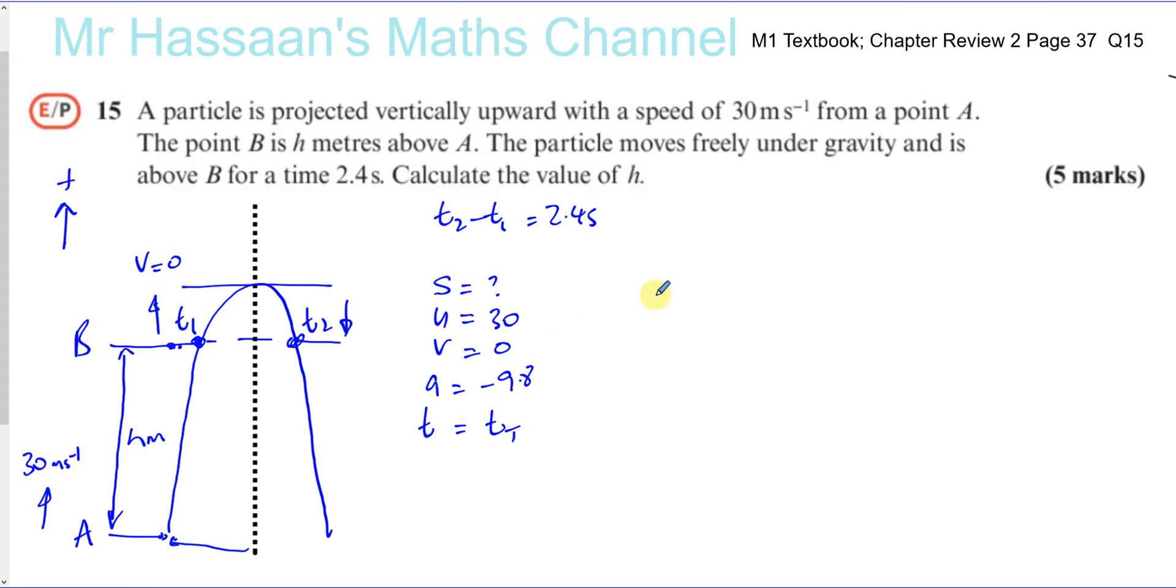So we can use V equals U plus AT here. So we're going to say V is zero, U is 30, A is minus 9.8, and T is time for the top of the flight. So the time for it to reach the top of the flight is going to be 30 divided by 9.8. That's the time it reaches the top of the flight.